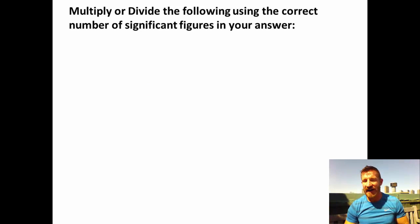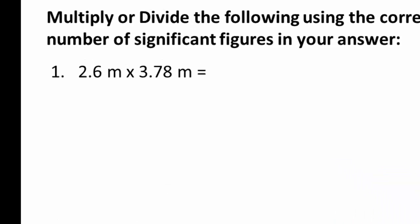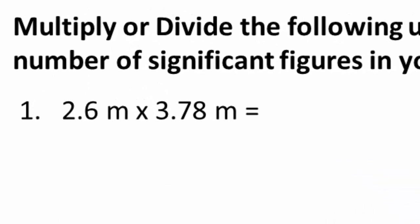How does it work when you multiply or divide? That's a little different. When you multiply or divide, you go by the least number of significant figures — you don't count places to the right of the decimal at all. For example: 2.6 times 3.78 — the first number has 2 significant figures and the second has 3. So we want 2 significant figures in our answer. Multiplying gives 9.828 square meters, which rounds to 9.8 square meters.